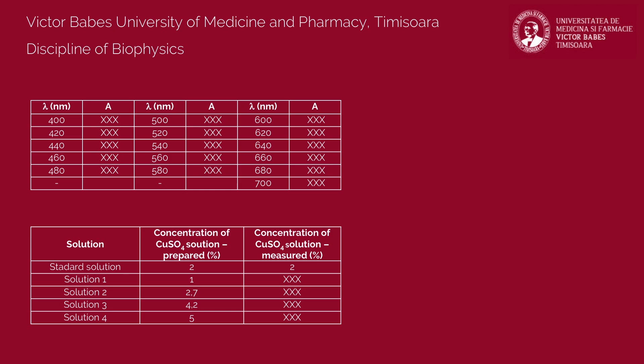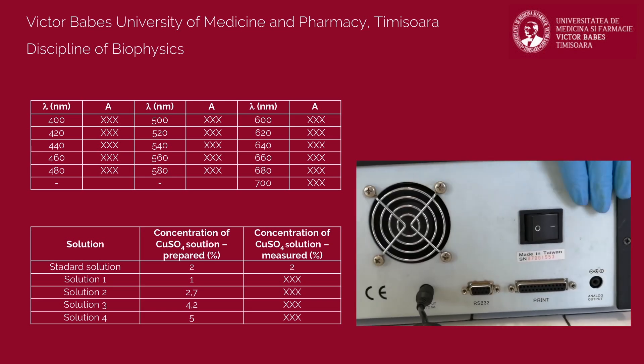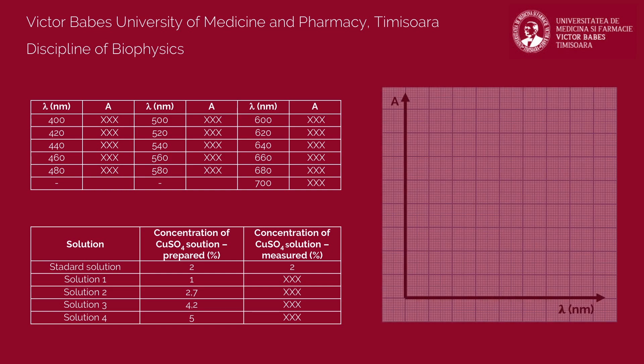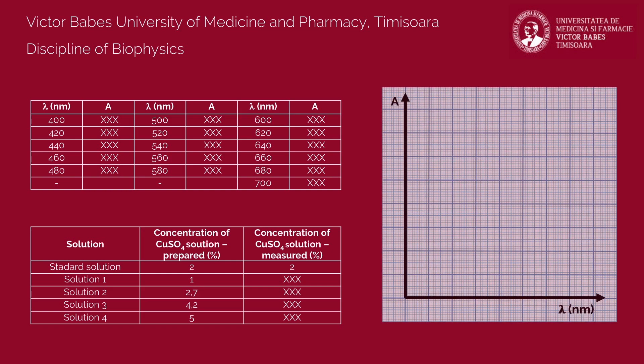Attention! After measurements, discard all the prepared dilutions in the sink. Once the experiment is finished, rinse with distilled water all the recipients used and turn off the spectrophotometer. Finally, represent graphically the variation of absorbance with the wavelength.